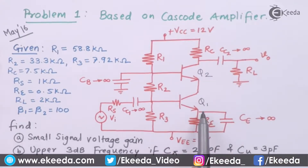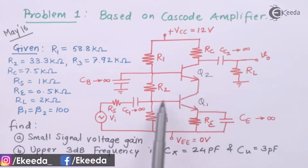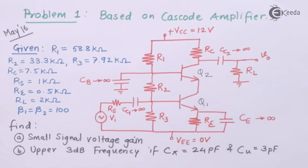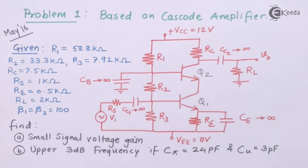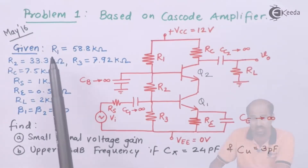Q1 is the input stage CE amplifier and Q2 is the transistor used for stage 2, which is the CB stage — the output stage of the multistage amplifier. So the given circuit is a cascode amplifier, that is a CE-CB multistage amplifier. Let's quickly get the given values.